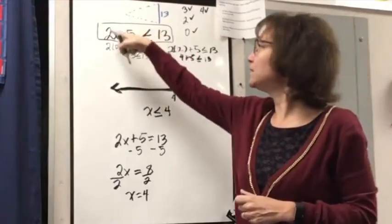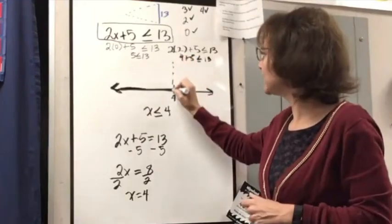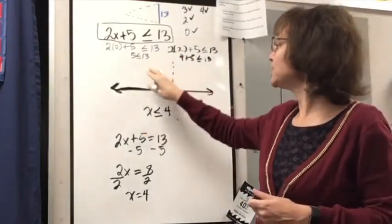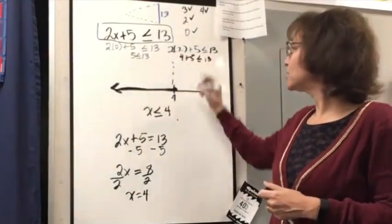So once I have that boundary point, I can use this original inequality to test, to interval test, to see which side is true. Well, I know because I already figured it out right here. But I would just test a number to the left and a number to the right.